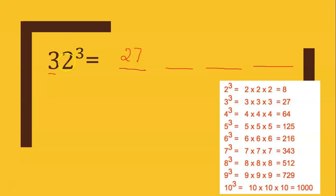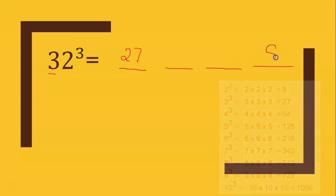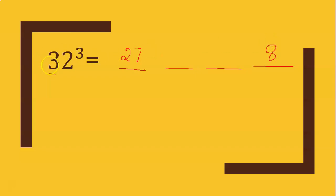The last number is 2. Now, 2 cubed is 8. We have 8. Next, we have the square. We will multiply all the numbers. That is 18.